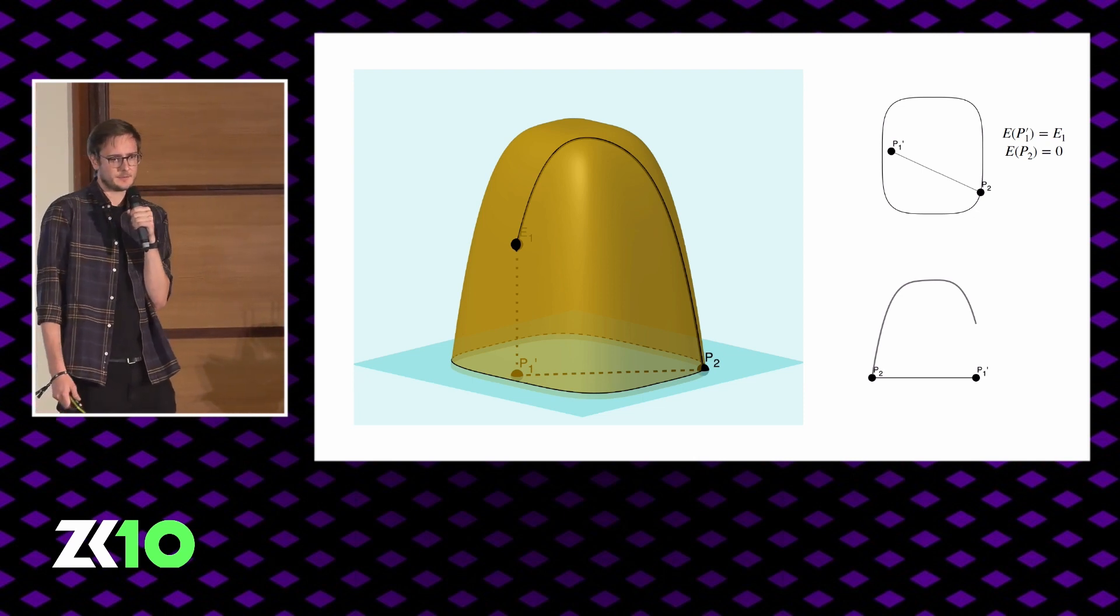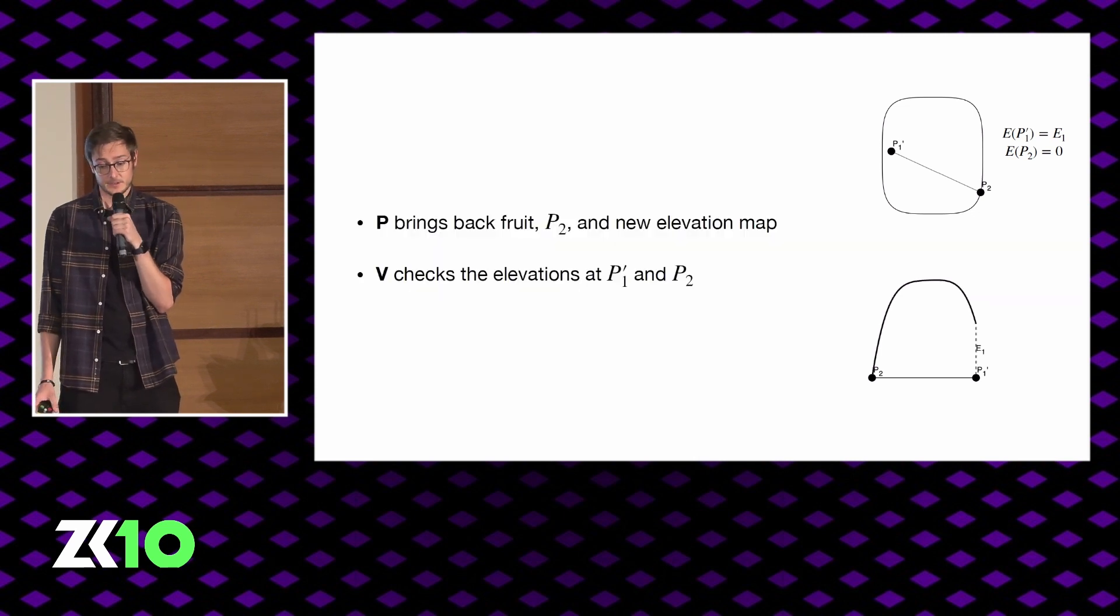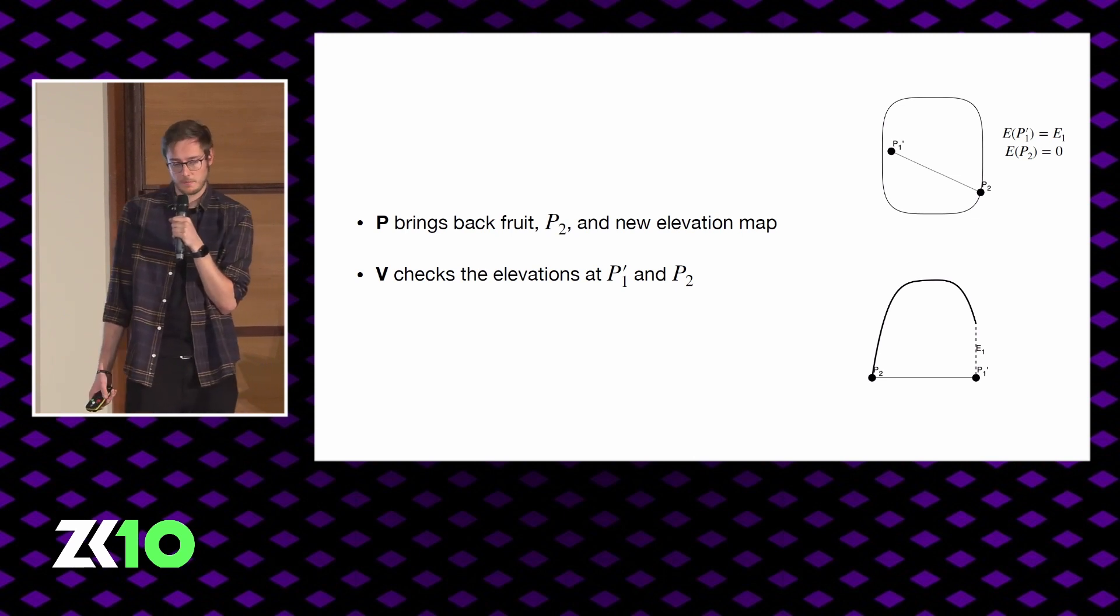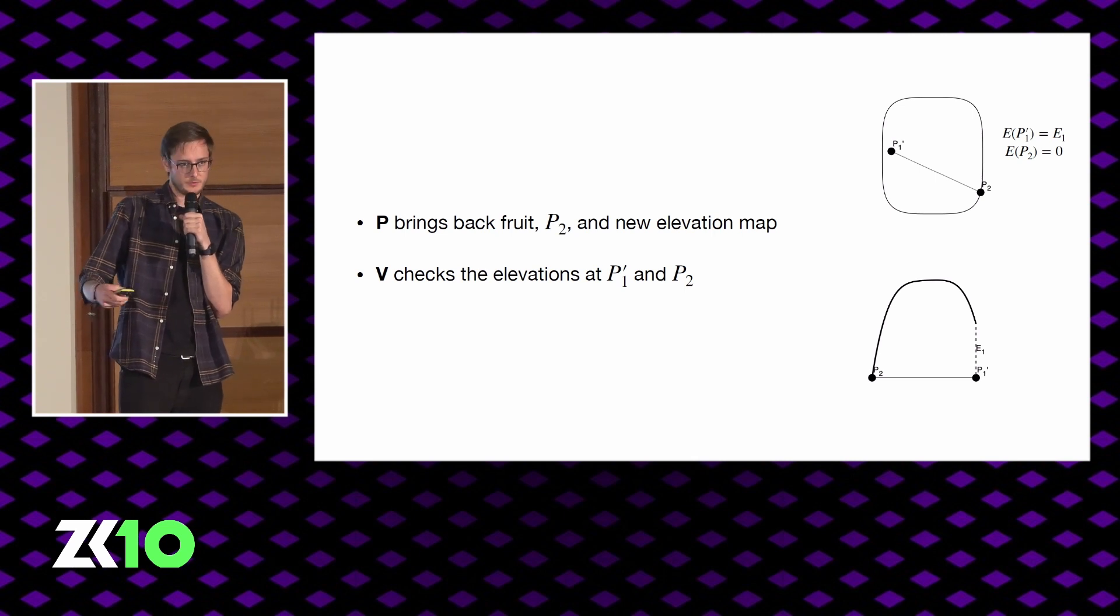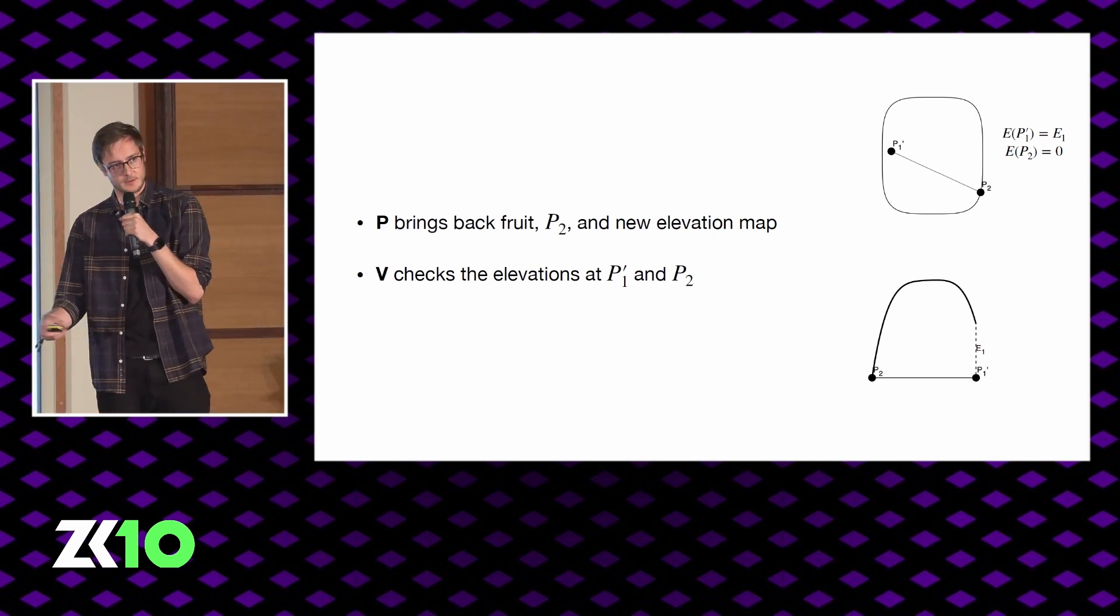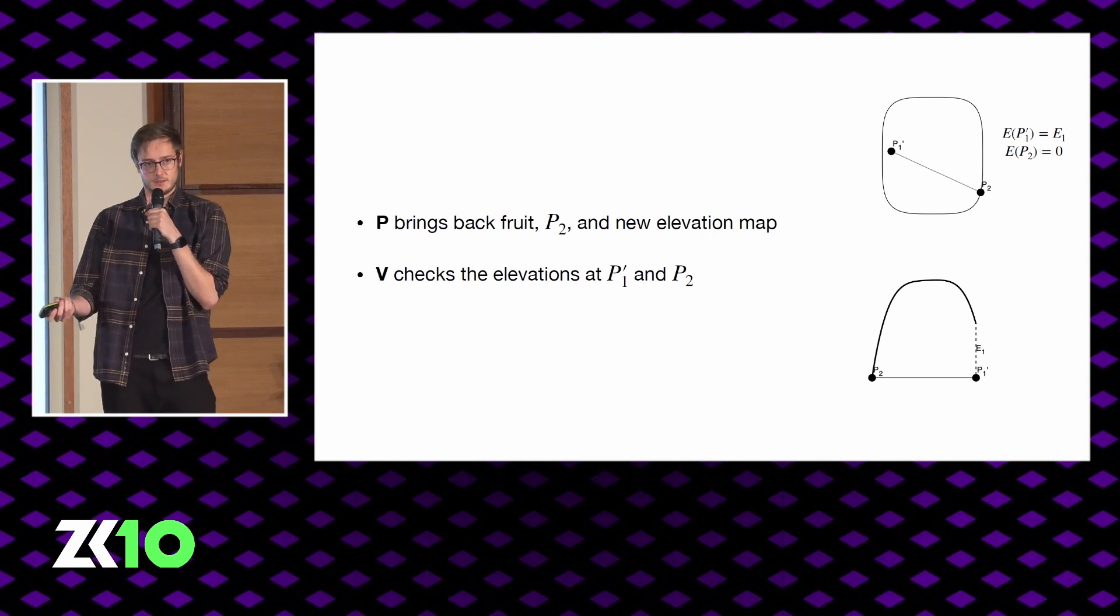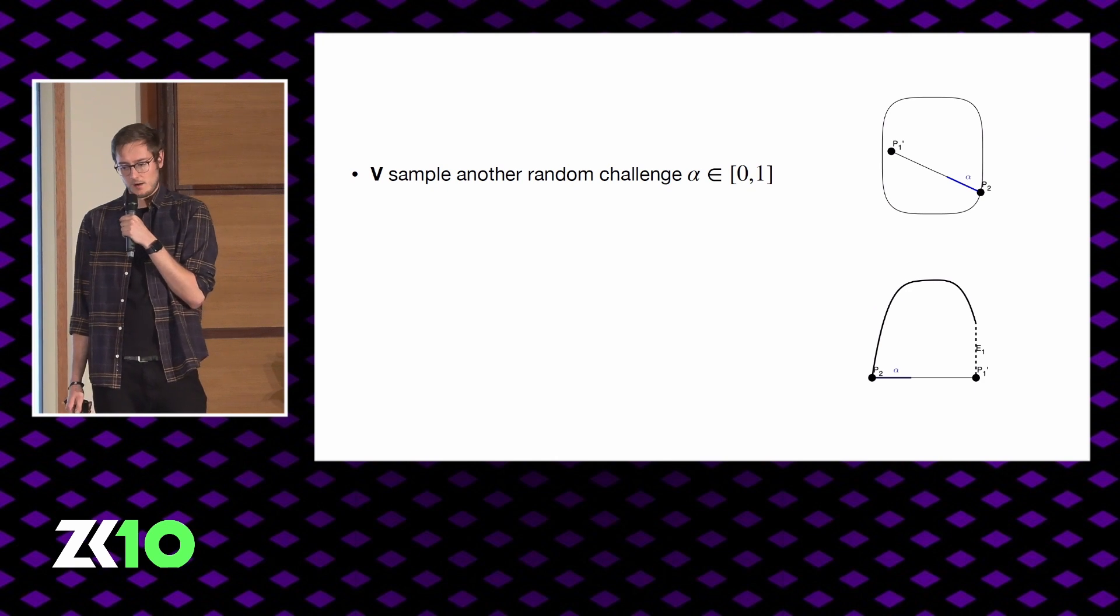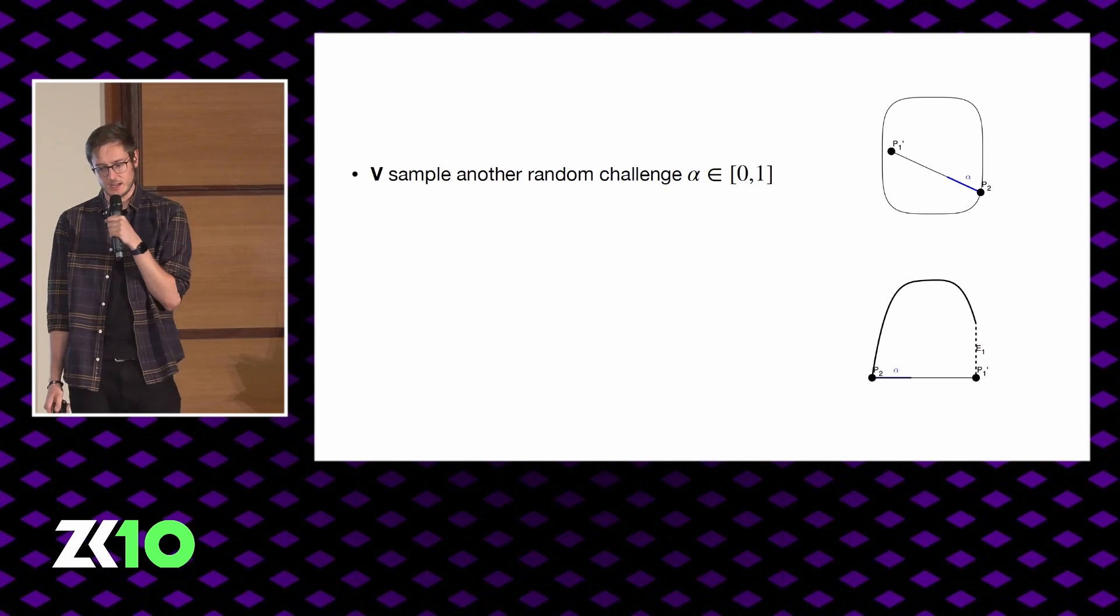And he does this, he sails back to mainland, and again he delivers to the verifier the fruits, the new coordinate P2, as well as a new elevation map. And just as before, the verifier is going to check on this elevation map that both points that he has and the claimed elevations match up with the elevation map. So now we've again reduced our problem to just checking the elevation map and we can ignore the two previous points. Or well, not yet, because we still first have to sample a random midpoint using another challenge alpha.